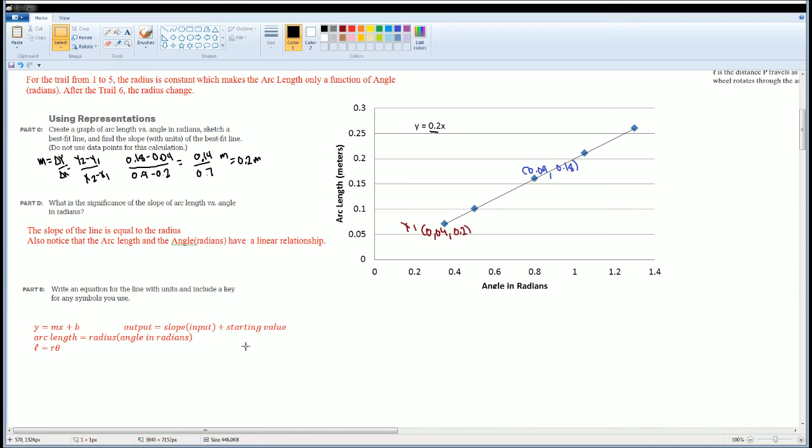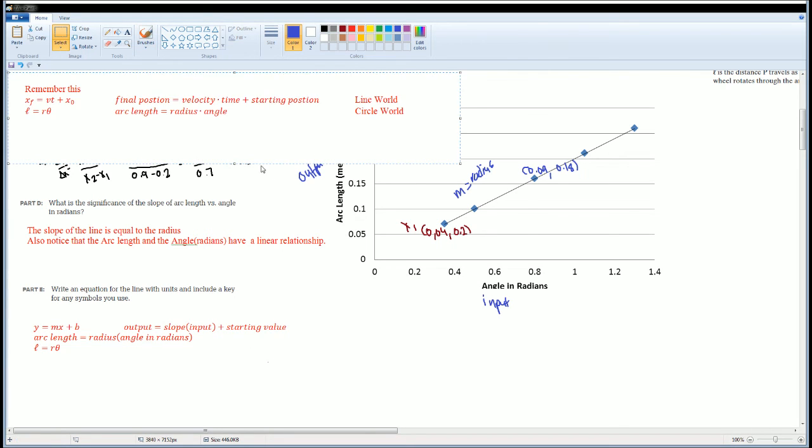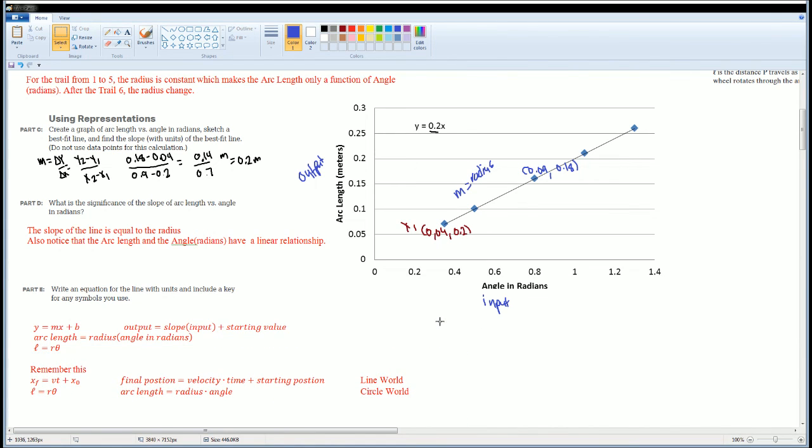I would like you to understand that in this case, the output is your arc length. Your input is your angle in radians, and the slope here was your radius. If you multiply your radius times your input, you should get your output. That makes sense, right? If you'd like a better way of looking at it, just think about it as a line. Your final position is given by your velocity or speed times the time plus your starting value.